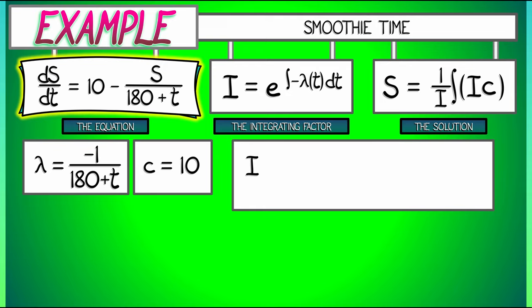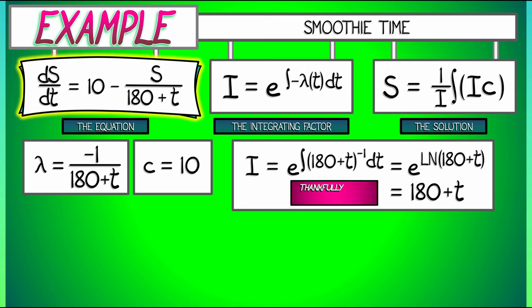Now the tricky part in this method is being able to compute the integrating factor, but in this case it's not so bad. We're exponentiating the integral of quantity (180 plus t) to the negative one power. That integral gives us a log. We're exponentiating a log of (180 plus t), that gives us exactly 180 plus t. Thankfully this was not so bad.